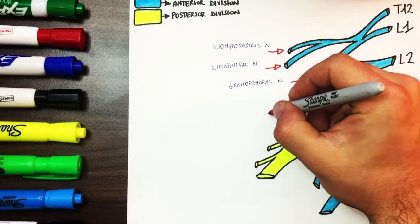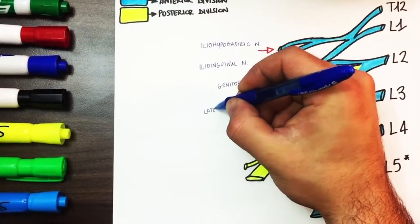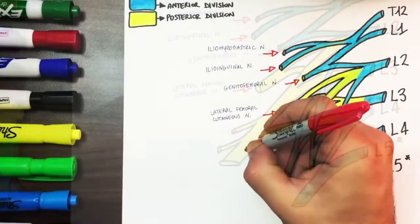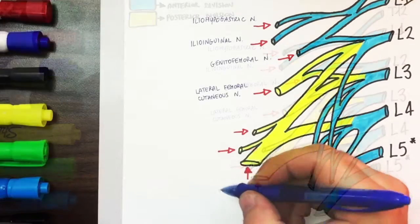From L2 and L3 arises the lateral femoral cutaneous nerve which is part of the posterior division. Moving inferiorly we have the main nerve arising from the lumbar plexus.